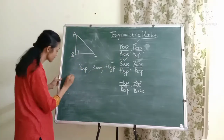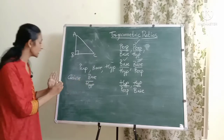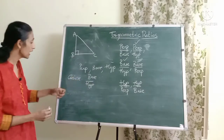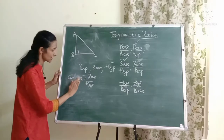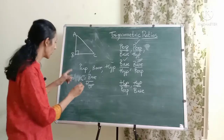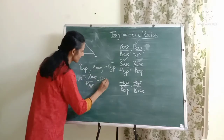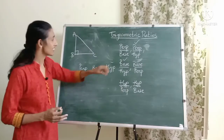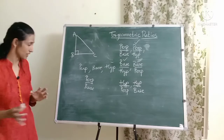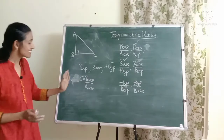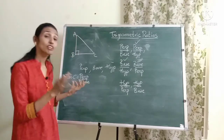The next ratio is base upon hypotenuse, called the cosine ratio — it's the complement of sine, which is why it's called cosine. The short form is cos, so cos C equals base upon hypotenuse, which is BC upon AC. The third ratio is perpendicular upon base, called the tangent. The short form is tan, so tan C equals perpendicular upon base, which is AB upon BC.